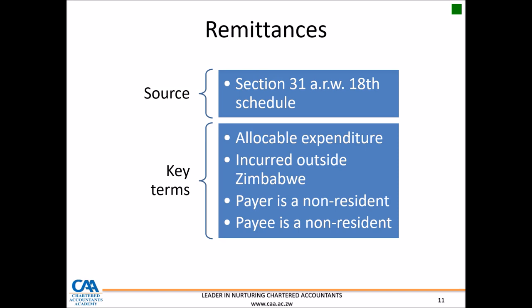For example, consider Bitumen World, who are performing work within Zimbabwe — renovating roads under a government contract. They may also need civil engineering assistance, so they hire a South African company to help with technical work. When Bitumen World pays that South African civil engineering company, that payment is what we call a remittance. In other words, Bitumen World — a non-resident entity — is paying another non-resident entity, and ZIMRA will require Bitumen World to withhold a certain amount from that payment.